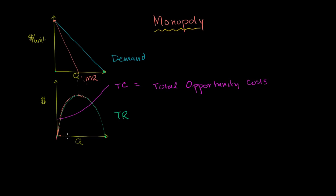Even from this diagram you can start to visually see economic profit. The difference between your total revenue and your total opportunity costs for a given quantity gives you your economic profit. So for this quantity, economic profit is represented by the height of the bar between these two curves. As we increase quantity, these curves get further and further apart because the total revenue slope is larger than the total cost slope. The distance keeps growing, looks like it maxes out right around here, and then the two curves start getting closer and closer together.